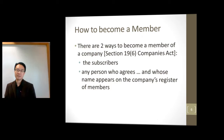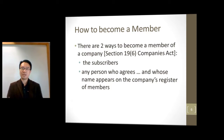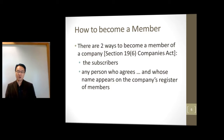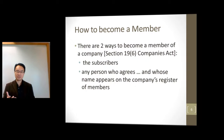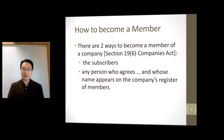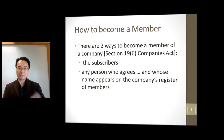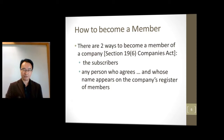How do you become a member? You could be a subscriber — a subscriber is somebody who puts in money before the company was incorporated. Or you can be a person who agrees and whose name appears on the company's register of members. With the amendments, we now know that this register will be kept by ACRA. So to find out if you are a member of a company, check whether your name appears on the company's register of members, if you have agreed to it.